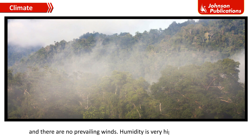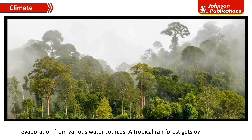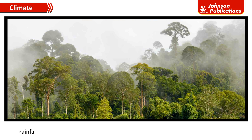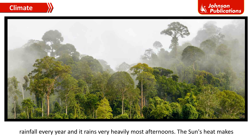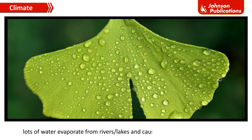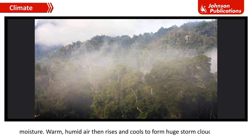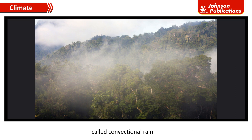Humidity is very high due to continuous evaporation from various water sources. A tropical rainforest gets over 168 cm of rainfall every year, and it rains very heavily most afternoons. The sun's heat makes lots of water evaporate from rivers or lakes and causes plants to transpire, releasing warm, humid air that then rises and cools to form huge storm clouds. This is called convectional rainfall.